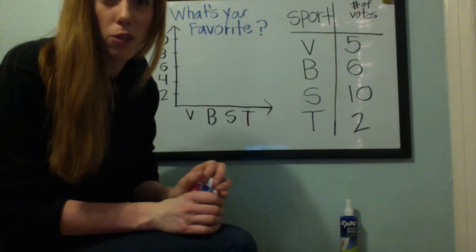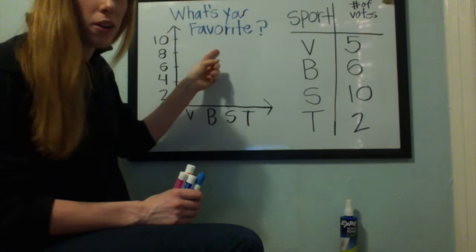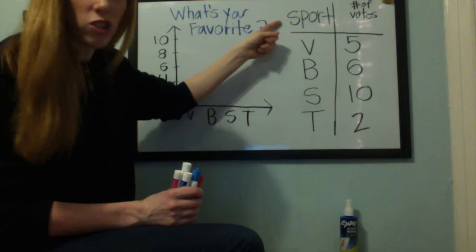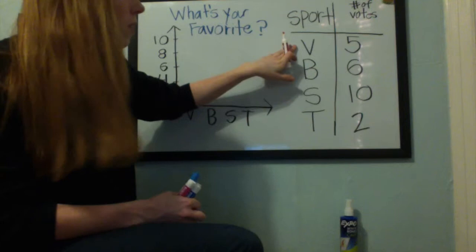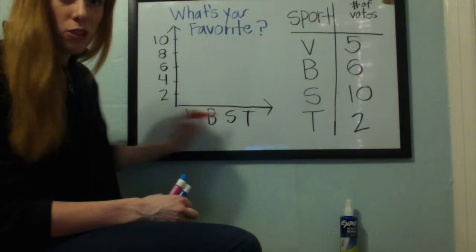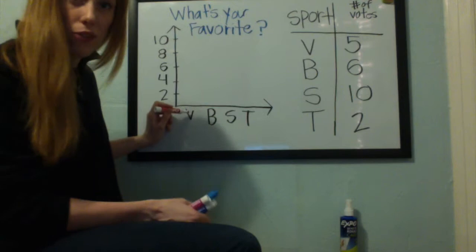For this bar graph, the title is going to be 'What's your favorite sport?' We've got the x-axis, which is going to show which sport was the student's favorite, followed by the y-axis showing the number of votes. To graph this bar graph, let's look at volleyball first. The number of votes says there's five, so on this axis volleyball is going to be first and we just want to go up five to show that five is the number of votes.